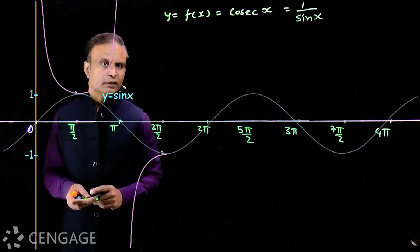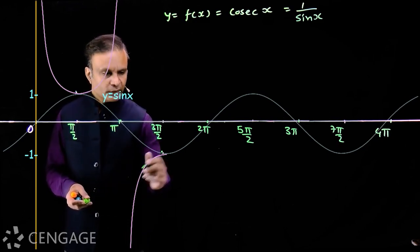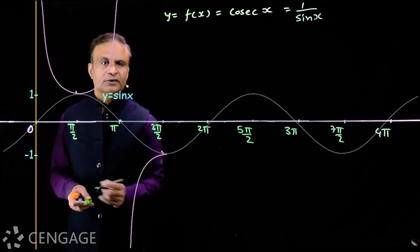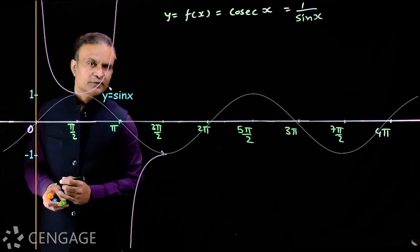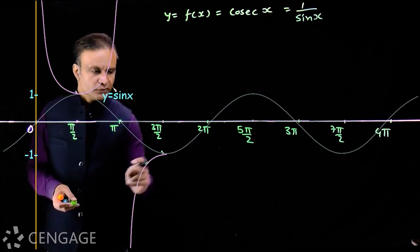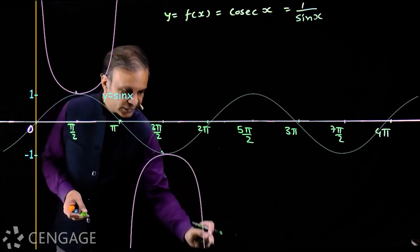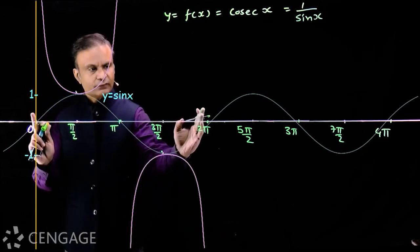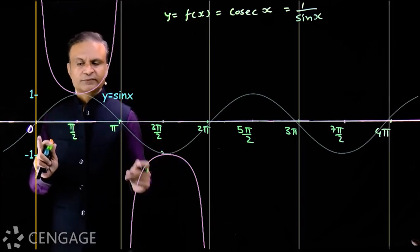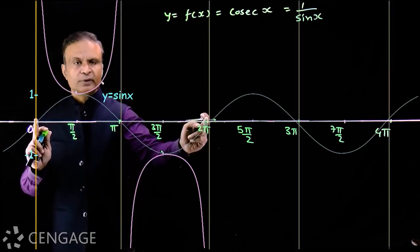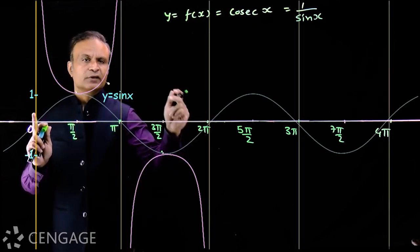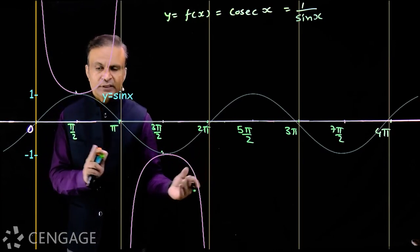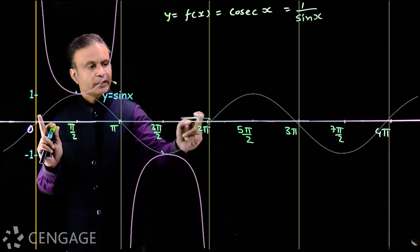In the fourth quadrant, sin x increases, so cosec x decreases — the graph looks like this. This completes one full cycle of the cosec x function in the interval 0 to 2π.